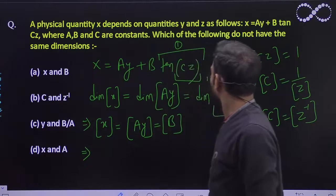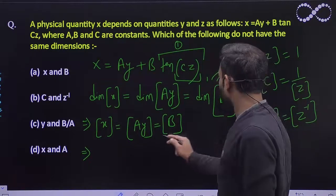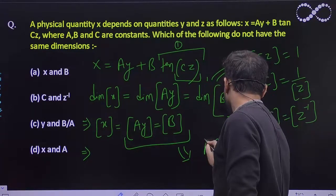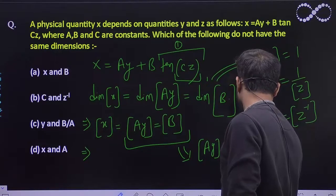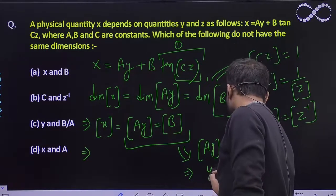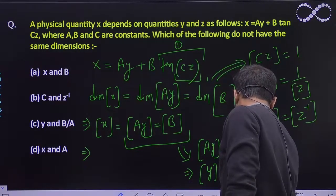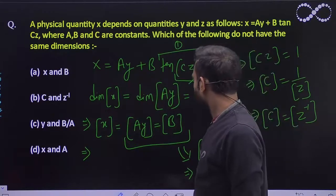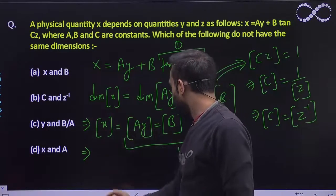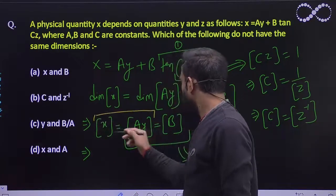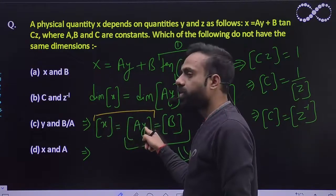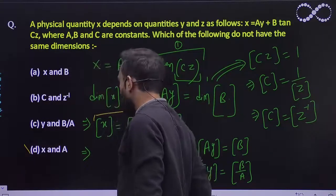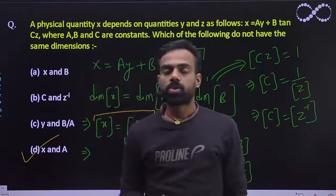Now checking y and b/a: from the relation dimension of a·y equals dimension of b, we get dimension of y equals dimension of b upon a. So y and b/a also have the same dimension — that is also not the answer. For x and a: from the equation, x and a·y have the same dimension, so x and a cannot have the same dimension. Therefore, the correct answer is D.